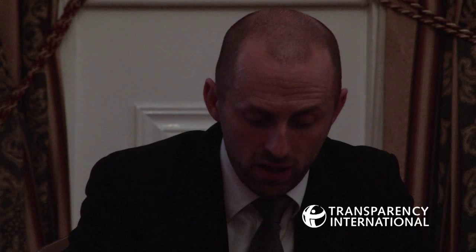How do we compile the index? We use 13 different surveys over two years. For Ireland's score, the information was gathered between 2009 and 2010. We then standardize the data — some scoring scales used by think tanks vary from zero to five or zero to one hundred — so we standardize the data using a standard deviation to come up with a reliable indicator of relative levels of corruption across those 13 different surveys. This allows us to come up with a score or ranking within a 90 percent confidence range.